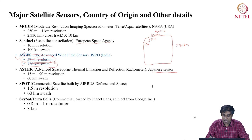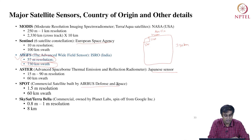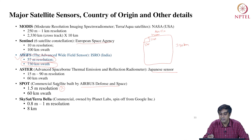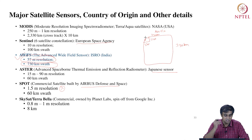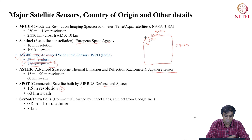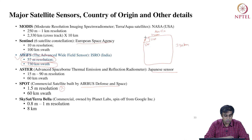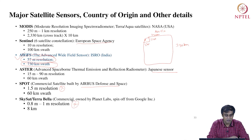We also have Japanese sensors and sensors from the European Space Agency, as well as private commercial satellites. SPOT by Airbus Defense and Space is a commercial satellite with a very high resolution of 1.5 meters per pixel — compare that to ISRO's 57 meters. There is also SkySat, also known as Terra Bella, which is Google's sensor in space, also a very high resolution sensor, though these commercial satellites are not freely available.